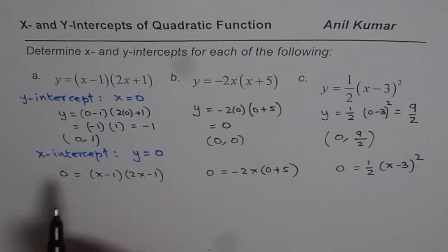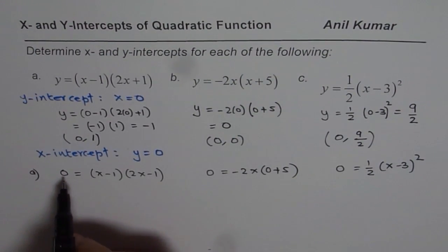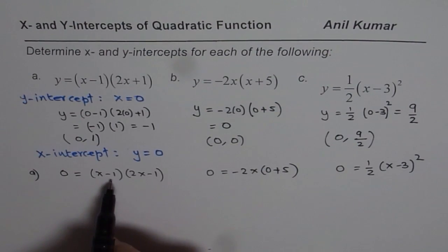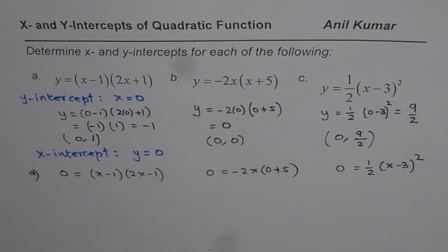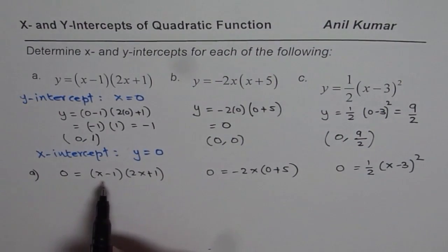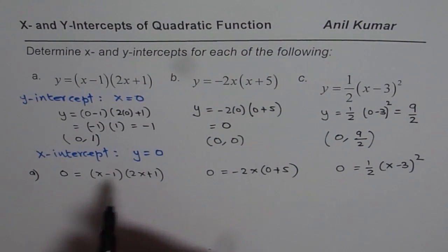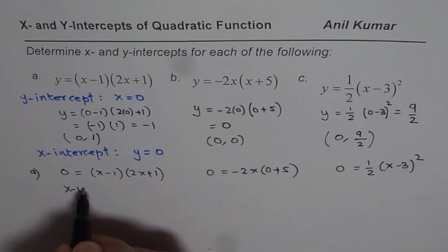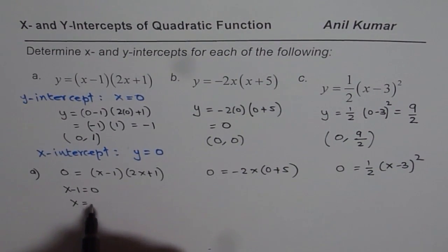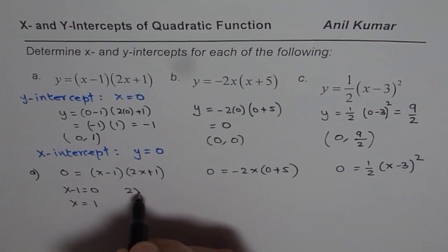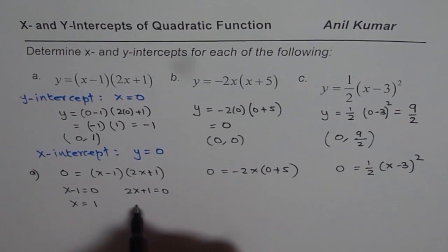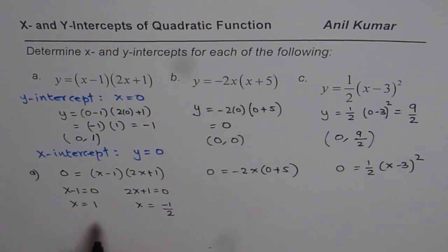Now the first one, which is for us given as 0 equals to x minus 1 times 2x plus 1. When will this be 0? You need to equate each factor to 0. If I equate x minus 1 to 0, I get x equals to 1. And if I equate 2x plus 1 equals to 0, I get x equals to minus 1 divided by 2. So there are two x-intercepts in this case.